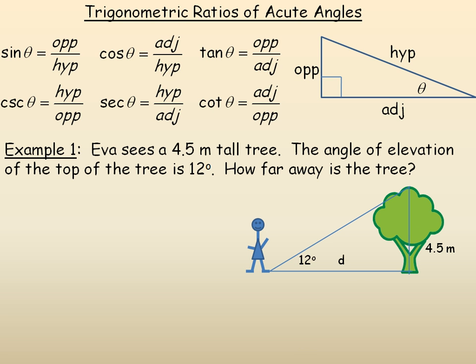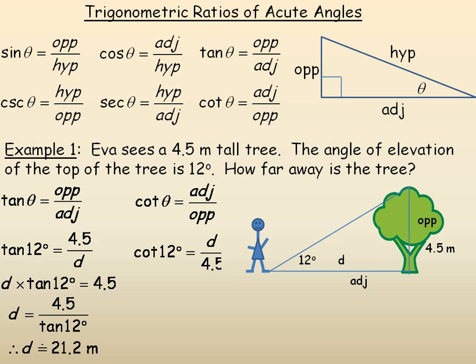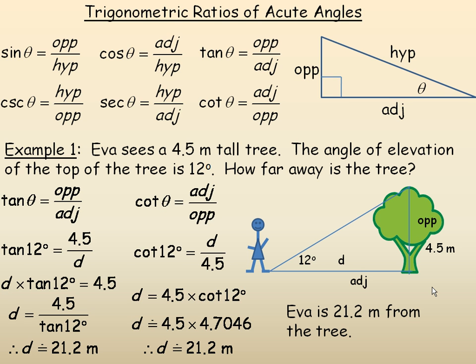I'm multiplying 4.5 by that 4.7046, and that gives us 21.2 meters. I just want to show you two different solutions that you could use to find Eva's distance to the tree. She's 21.2 meters from the tree. In any of these problems, if you only know two sides, that restricts you to only one of a couple trig ratios. That's why I wouldn't use cosine or secant.